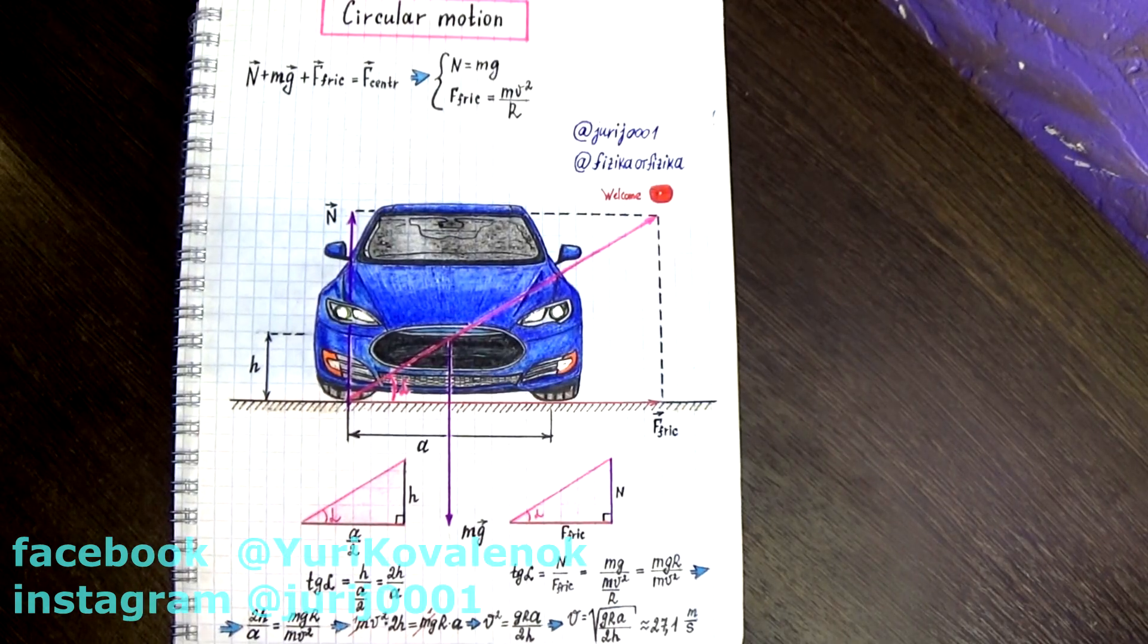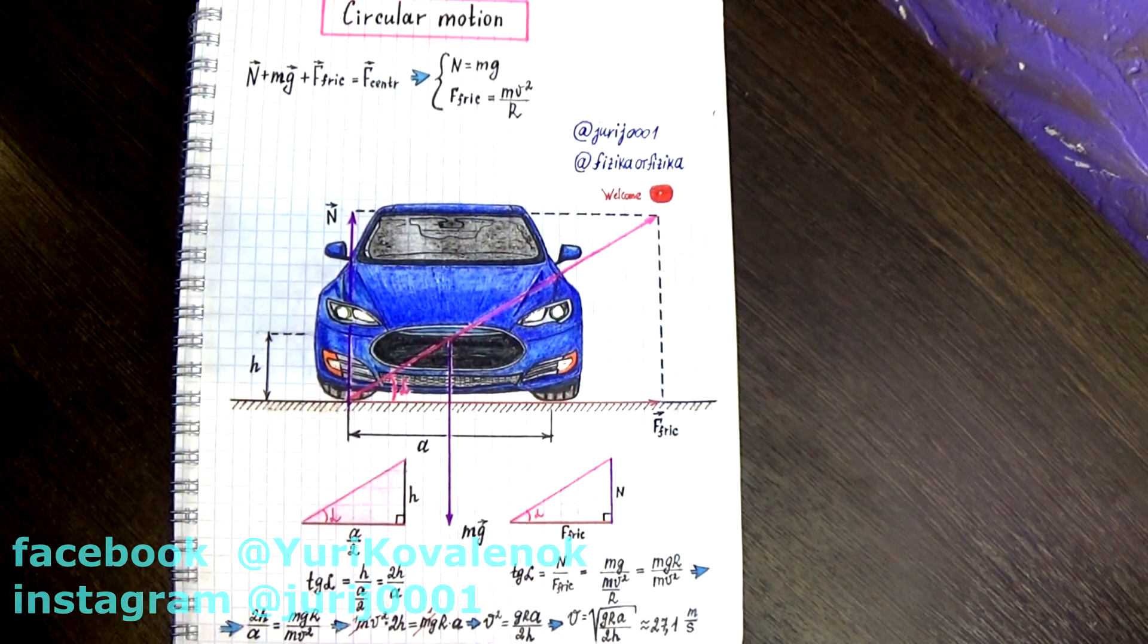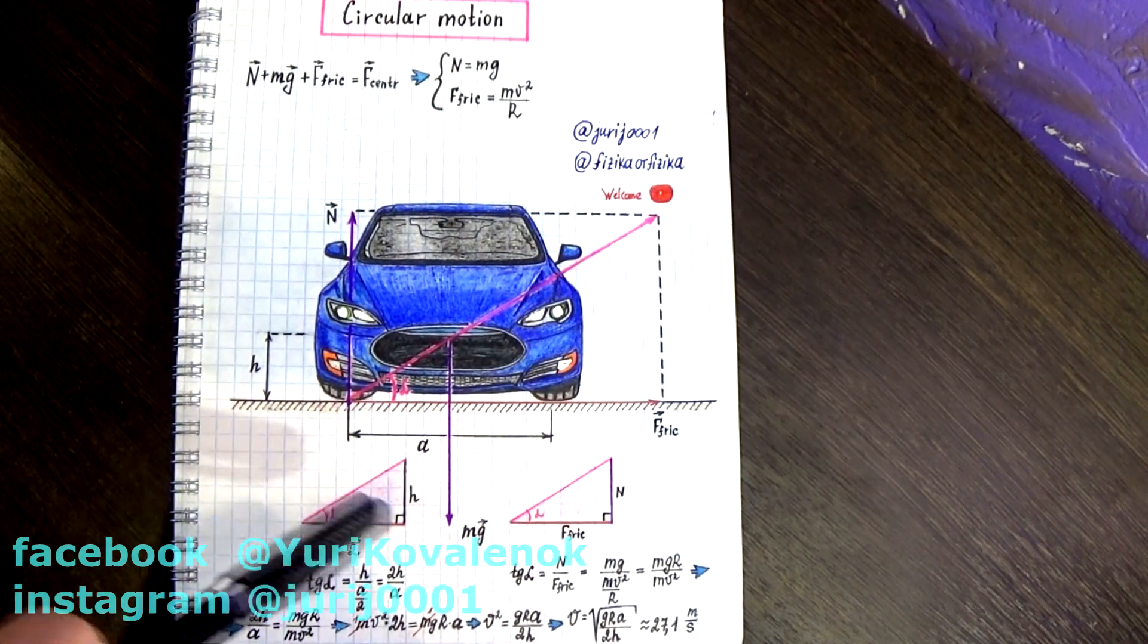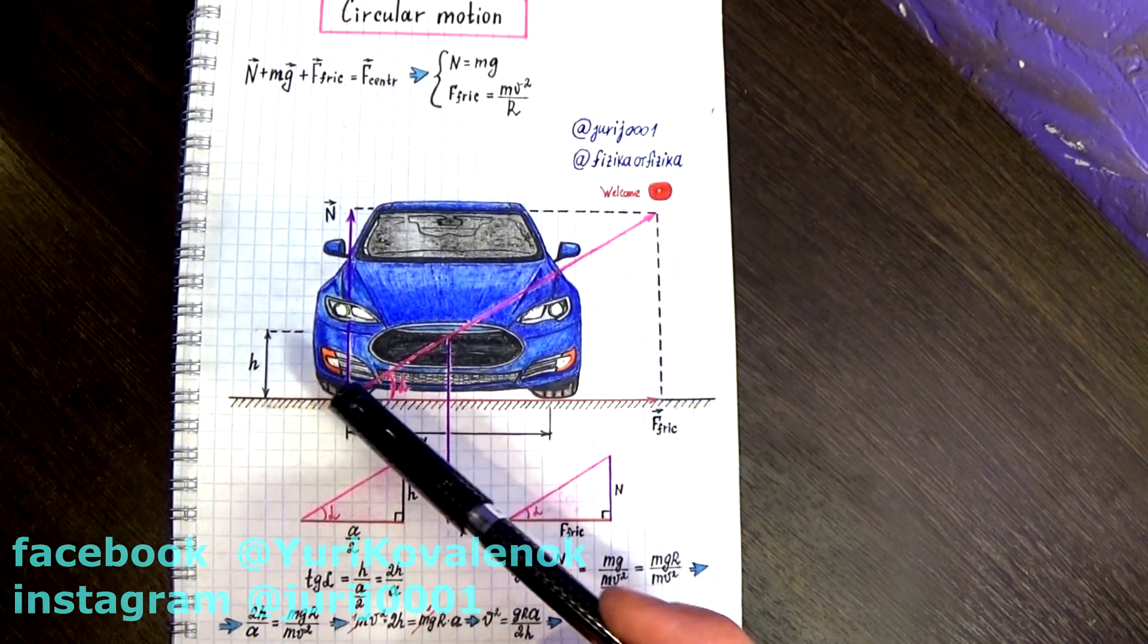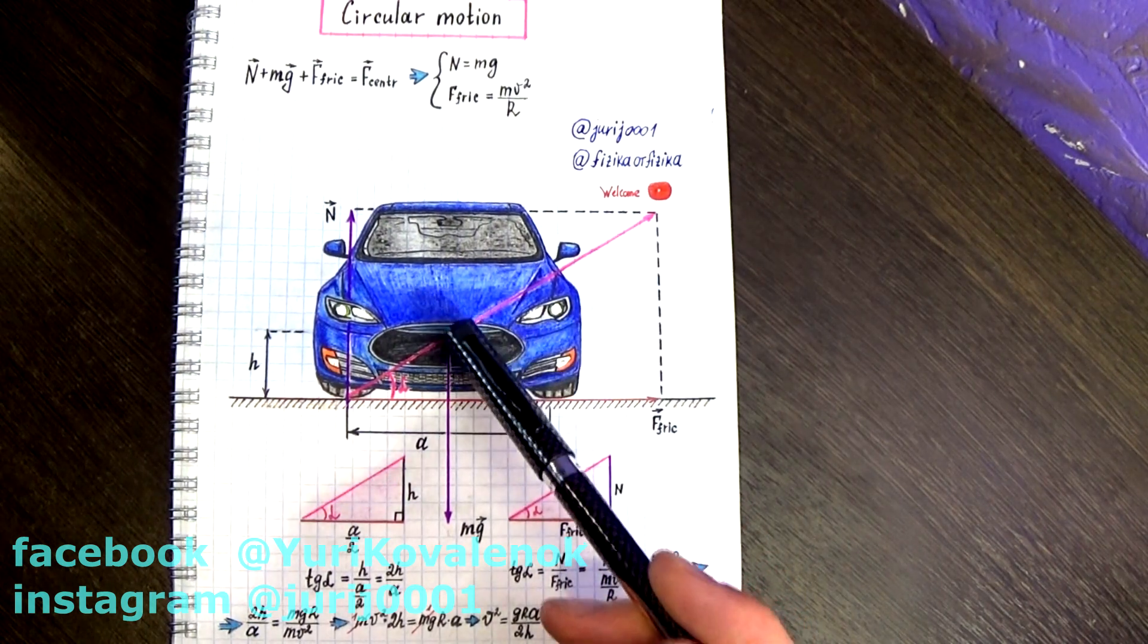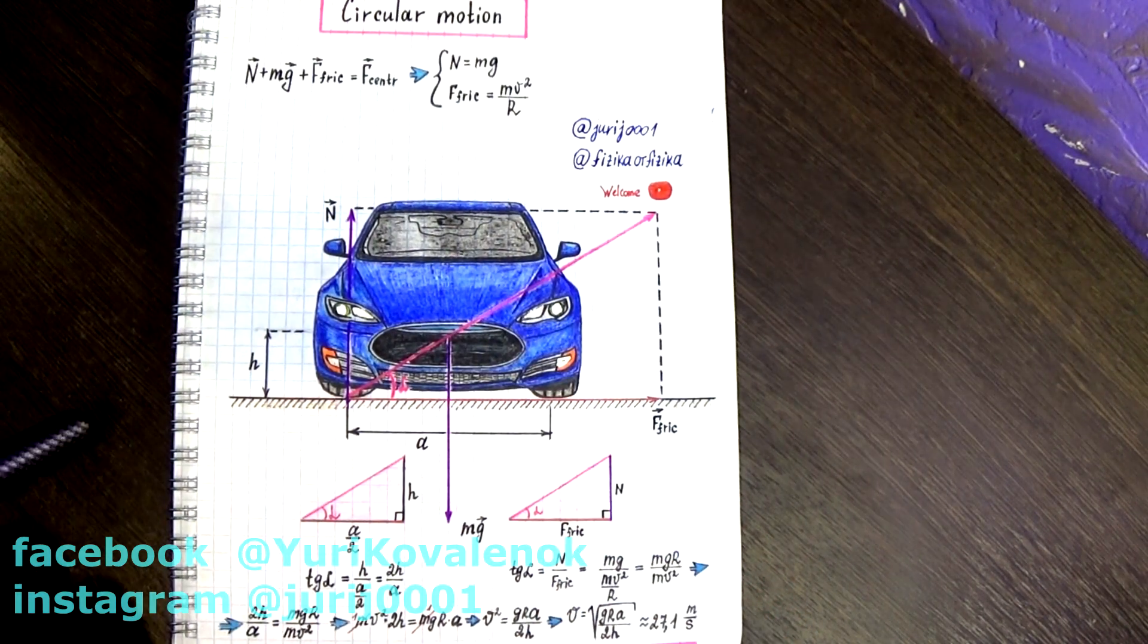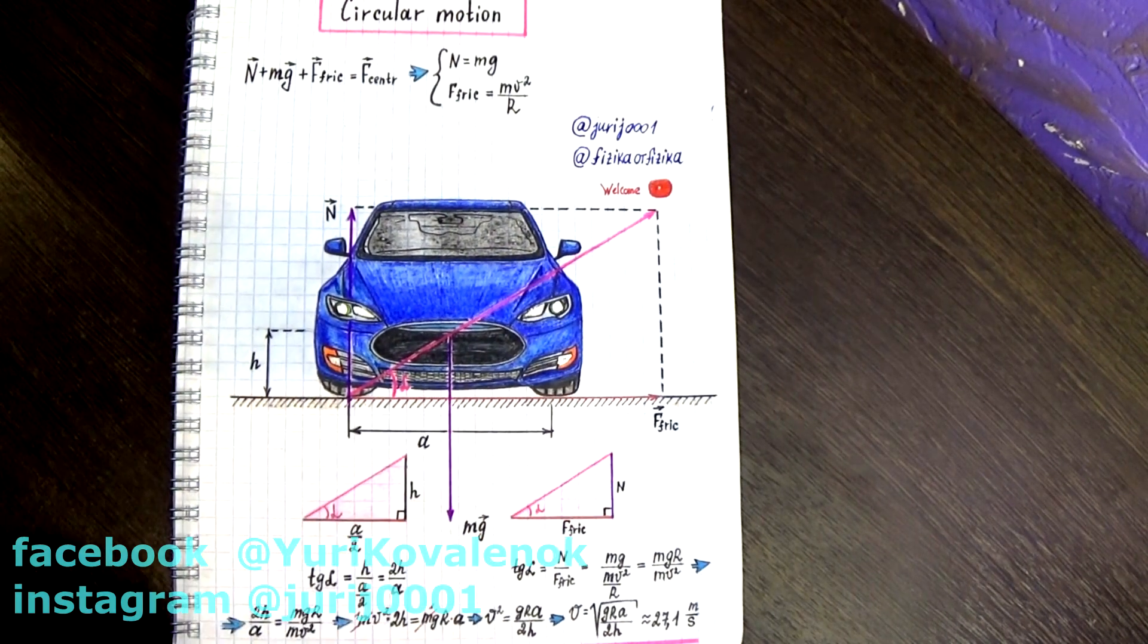In the next problem, I drew a Tesla car. We are talking about the maximum speed of movement around the circle so that the car does not tip over. This line must pass through the center of mass of the car. You will get the corresponding similar triangles and determine the speed.